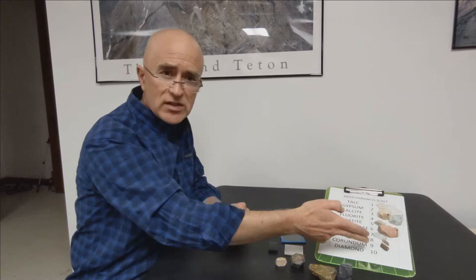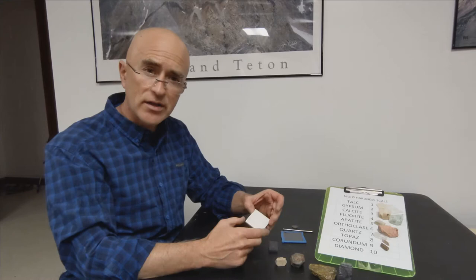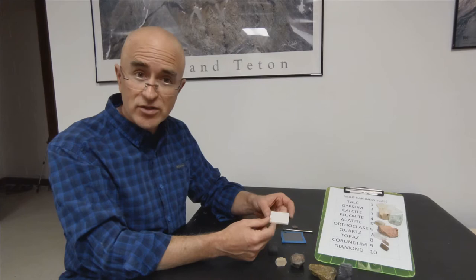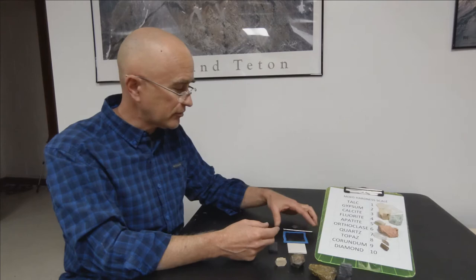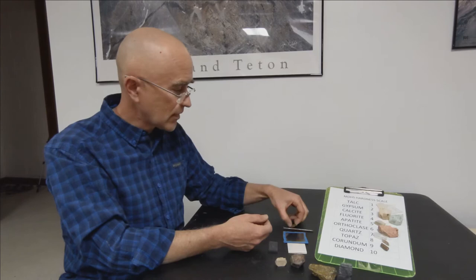But if I want to test the hardness I can use a set of these minerals or I have some common items that have known hardness. There are things like the streak plate which mineralogists and geologists use to identify the streak of a mineral. This has a hardness of 6.5. A piece of glass has a hardness typically of around 5.5. A steel nail has a hardness of about 4.5.